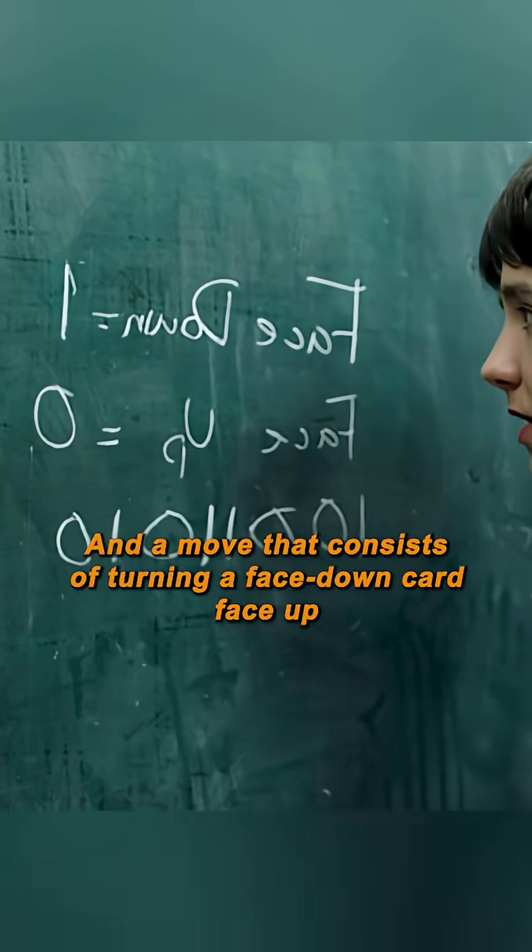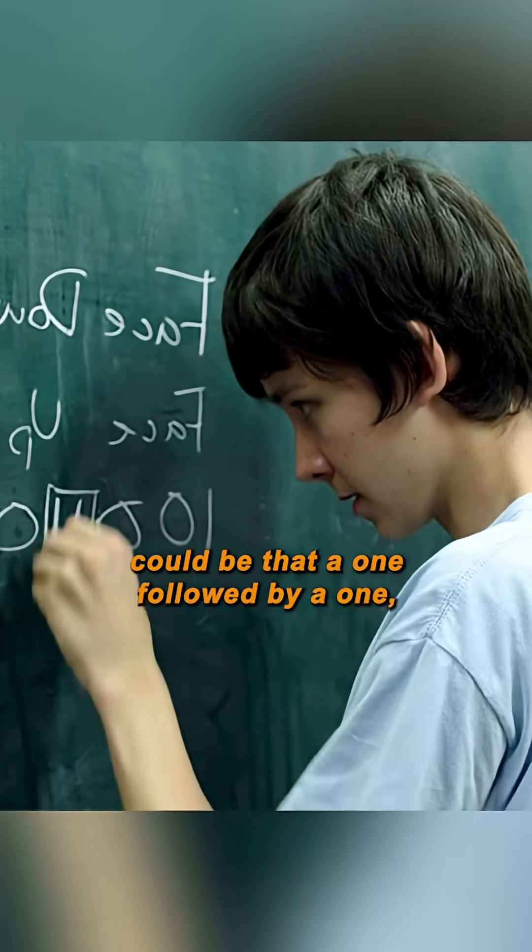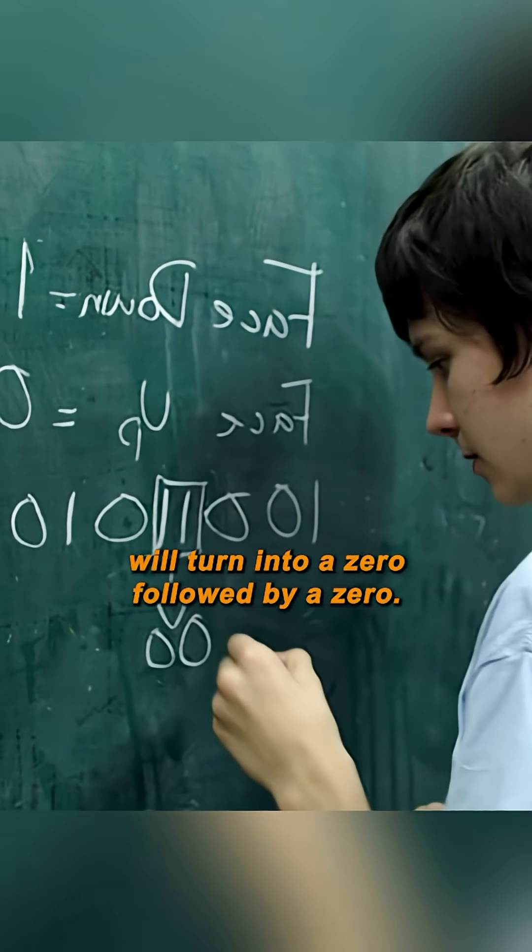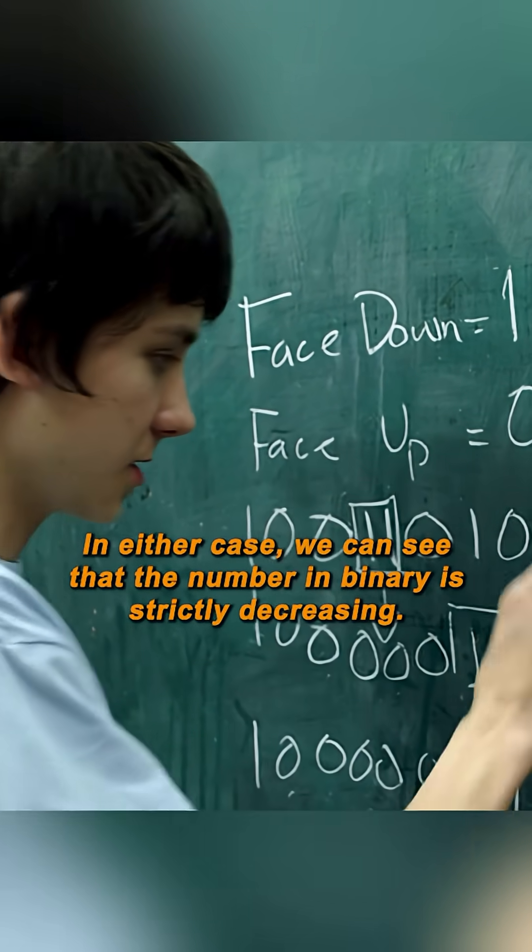And a move that consists of turning a face down card could be that a 1 followed by a 1 could turn into a 0 followed by a 0. In either case, we can see that the number in binary is strictly decreasing, which means that the sequence must terminate.